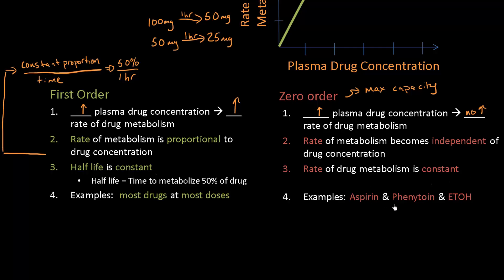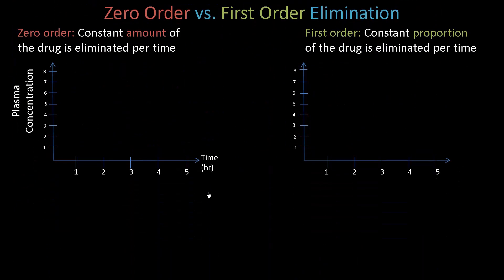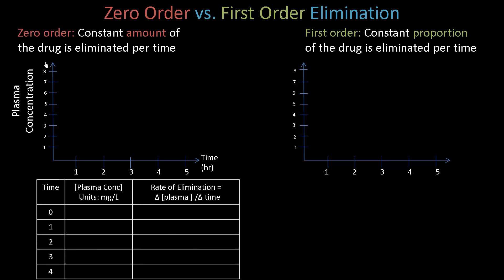There are three drug examples you should know that saturate enzymes quickly: aspirin, phenytoin, and alcohol. These reach zero order kinetics quickly relative to other drugs. Phenytoin is an anti-seizure medication, and this illustrates the danger well — if a person is taking a drug like that daily and you slightly increase the dosage, the drug can build up in the person's plasma. We also need to differentiate first order from zero order kinetics using a plasma concentration versus time graph.